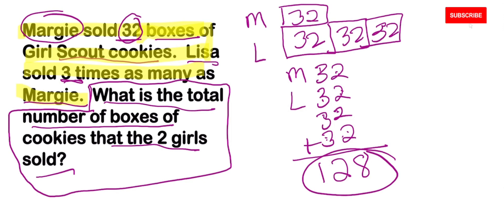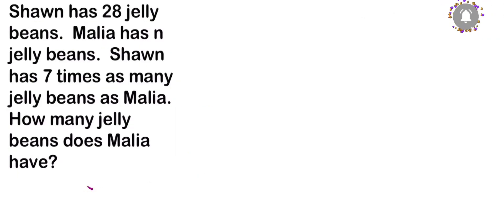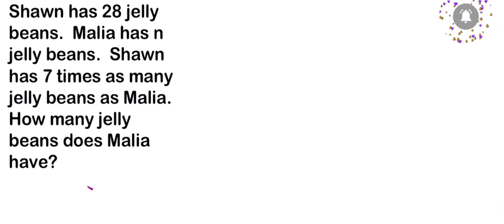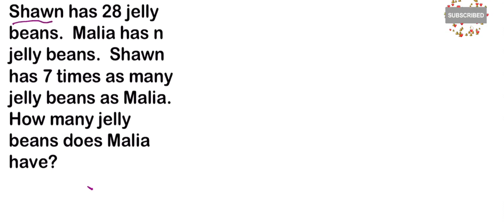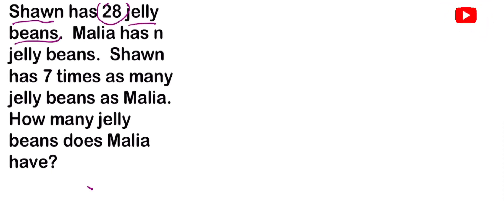Are you confused? Don't worry, we have time — let's look at another problem. This is also a two-step problem that requires us to actually think. This one says that Sean sold 28 jelly beans, so they've given us the total number of jelly beans for Sean.